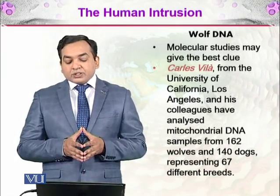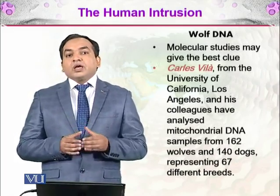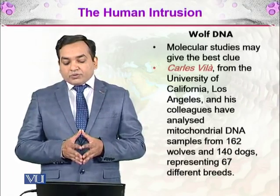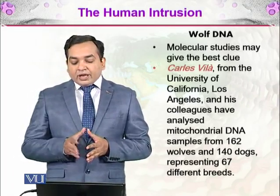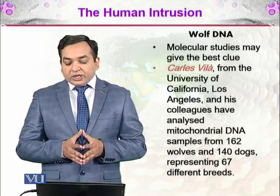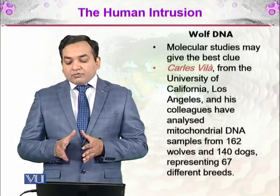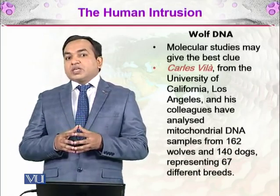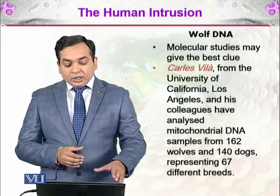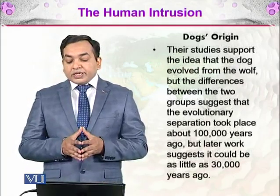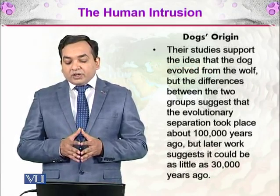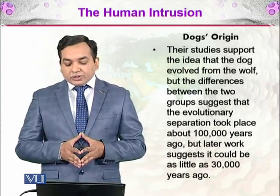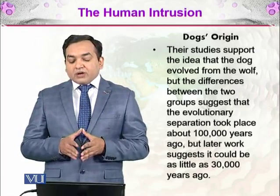Molecular studies may give the best clue. If we take wolf DNA and see how much resemblance it has with the modern-day dog — Carlos Vila from the University of California, Los Angeles, and his colleagues analyzed mitochondrial DNA samples from 162 wolves and 140 dogs representing 67 different breeds. Their studies support the idea that dogs evolved from the wolf, with evolutionary separation estimated at about 100,000 years ago, though later work suggests it could be as little as 30,000 years ago.